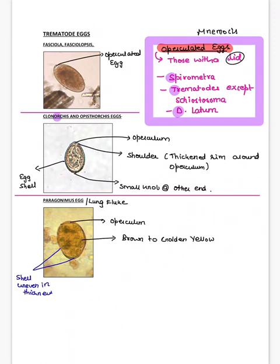For Fasciola, it again has an operculated egg. Now for Clonorchis sinensis — it also has an operculum or lid like other trematodes. Two important features: the presence of a 'shoulder,' which is a thickened rim around the operculum, and a small knob at the other end. You can see these features in the image.